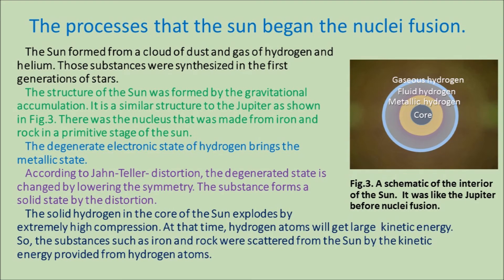The process by which the sun began nuclear fusion is explained as follows: the sun formed from a cloud of dust and gas of hydrogen and helium, synthesized in the first generation of stars, and its structure was formed by gravitational accumulation — a structure similar to Jupiter, as shown in Figure 3. There was a nucleus made from iron and rock in the primitive stage of the sun. The degenerate electronic state brings the metallic state, and according to Jahn-Teller distortion, the degenerated state changes by lowering the symmetry, forming a solid state. The solid hydrogen in the core of the sun explodes under extremely high compression, giving hydrogen atoms large kinetic energy, and substances such as iron were scattered from the sun by that kinetic energy.